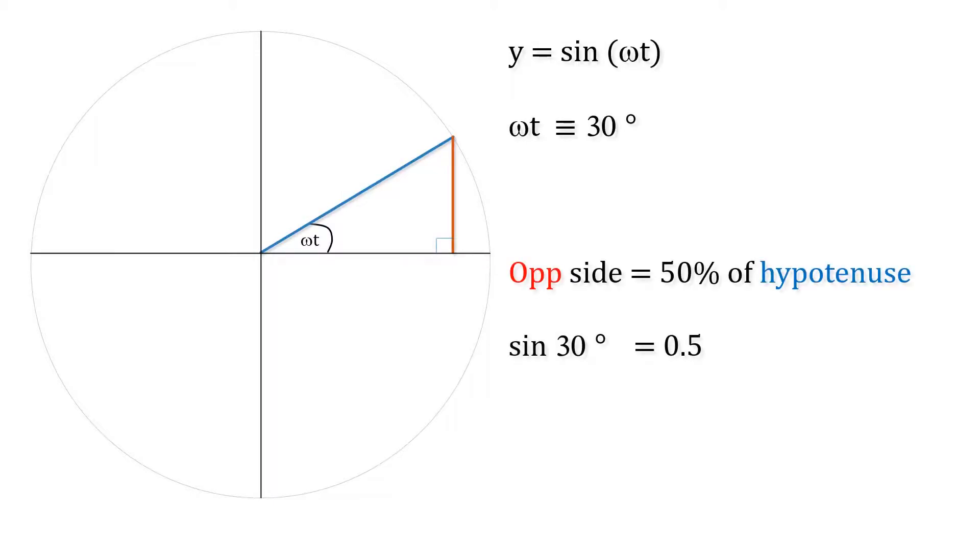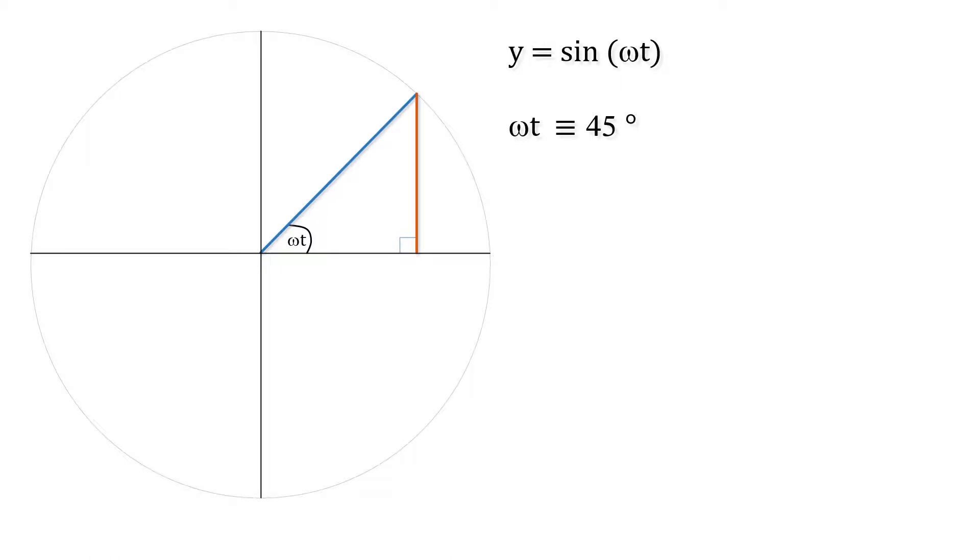So we have a unit circle with a radius of 1, and here omega t is equivalent to 30 degrees. Now omega t is equivalent to 45 degrees and so on.